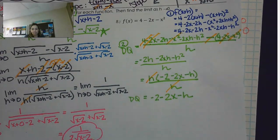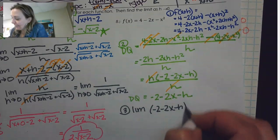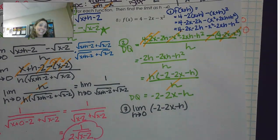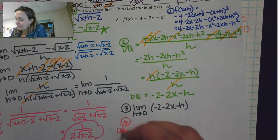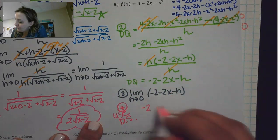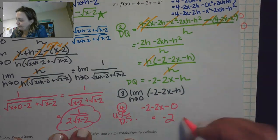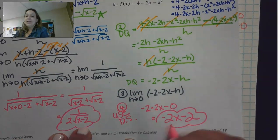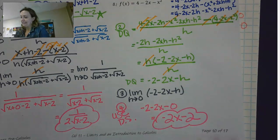Now we take the limit of negative 2 minus 2x minus h as h approaches 0. The nice thing is that this is all set for direct substitution — putting 0 in isn't an issue. So I have negative 2 minus 2x minus 0, which essentially gives me negative 2x minus 2.